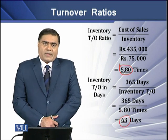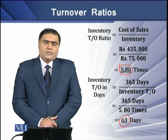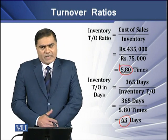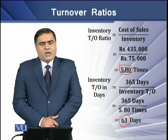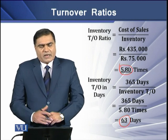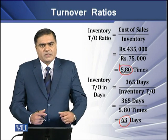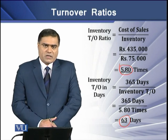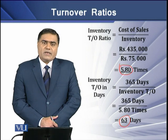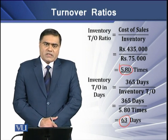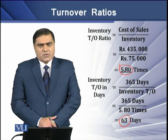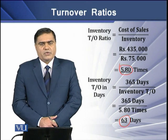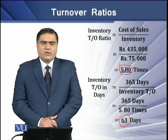This means that in this particular example, the firm needs 63 days to make its godown empty — that is, inventory is held for 63 days. There is an inverse relationship between inventory turnover ratio and inventory turnover in days: higher the turnover ratio, lesser is the turnover in days. So if the turnover ratio is higher, the turnover in days will be lesser, showing better management of inventory by the firm.